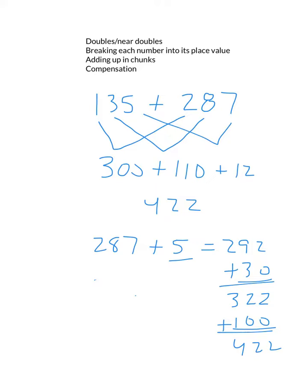Compensation is making them friendly numbers. So if I added 13 to 287, that gives us 300. So if I add that, that's a friendly number to work with. So if I'm going to add 13 to 287, I have to subtract 13 from 135. You're compensating for what you did to one number, you're doing to the other number.